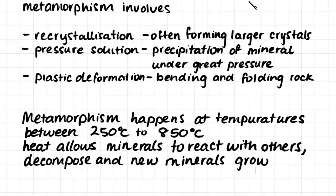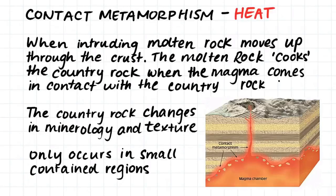Plastic deformation is the bending or folding of rock. Metamorphism happens at temperatures between 250 and 850 degrees Celsius. At these temperatures the rock does not melt, however there is enough heat to cause recrystallization, pressure solution, and plastic deformation. This heat allows minerals to react with one another, decompose, and for new minerals to grow.